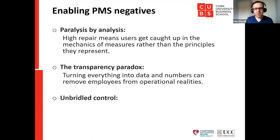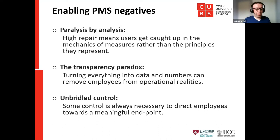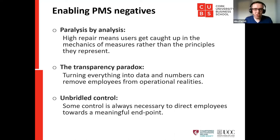With big data in mind — having all these measures can actually give you less visibility over what's really happening. Finally, there's unbridled control: some control is always necessary to direct employees. If you just left people to do whatever they want, you'd end up with a 'country club' atmosphere. Too much flexibility means people lose direction. We all need some level of control up to a certain point.